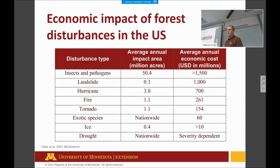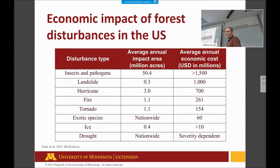There are also large economic impacts of forest disturbances in the U.S. One paper summarized various disturbances and found that insects and pathogens alone cost about $1.5 billion annually. Other impacts include landslides — not a major problem in Minnesota, but significant in other states — and weather damage from hurricanes, fire, and tornadoes, costing hundreds of millions of dollars.